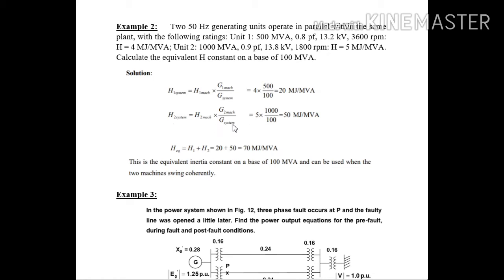Similarly, for H2 we get the value as 50 mega joules per MVA. They asked equivalent H constant on the base of 100 MVA. Equivalent by the formula we know the summation of these two, H1 plus H2 gives you the equivalent inertia constant as 70 mega joules per MVA. This is equivalent inertia constant on the base of 100 MVA and can be used when the two machines swing coherently.